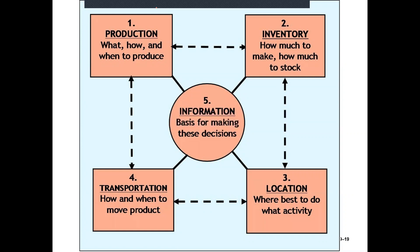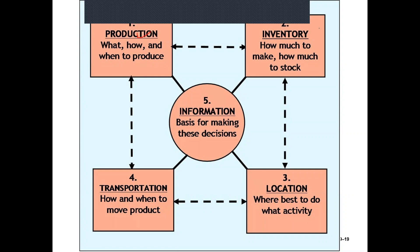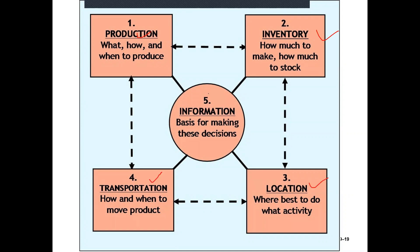The drivers of supply chain are: production, inventory, location, transportation, and information. Information is central to all of these drivers because for production, inventory, location, and transportation, you need information. Information is the basis for making these decisions, and it is central to all four other drivers.